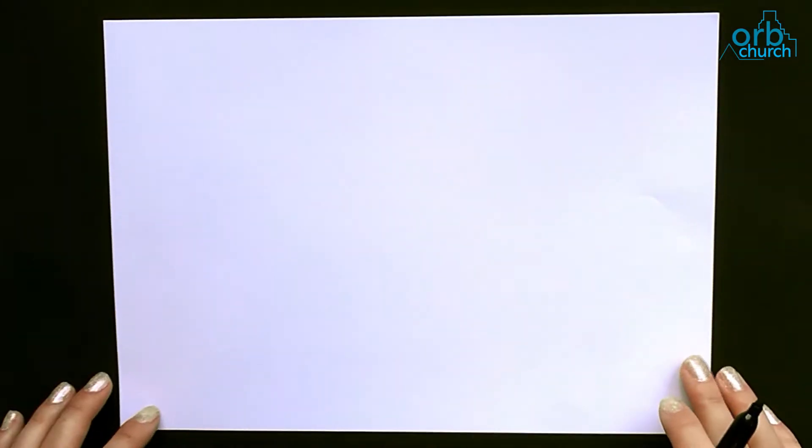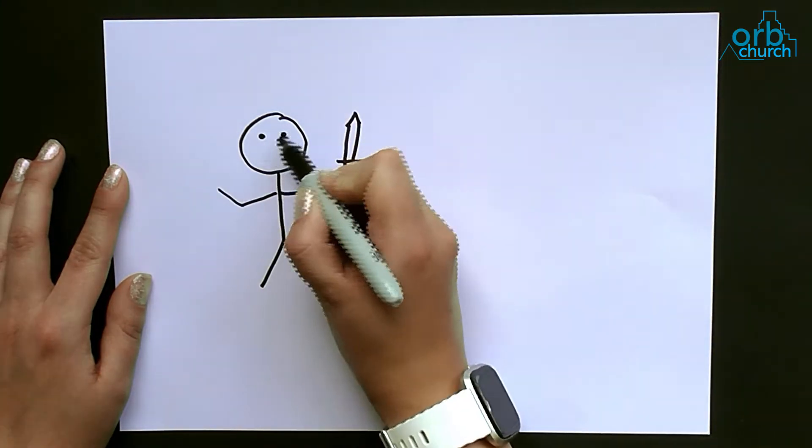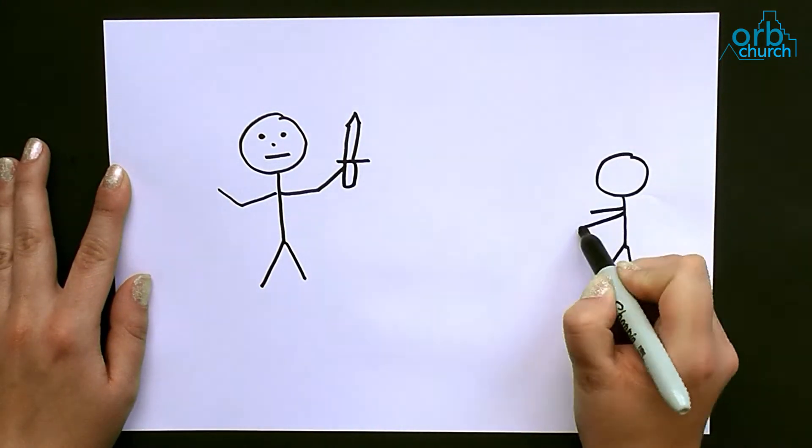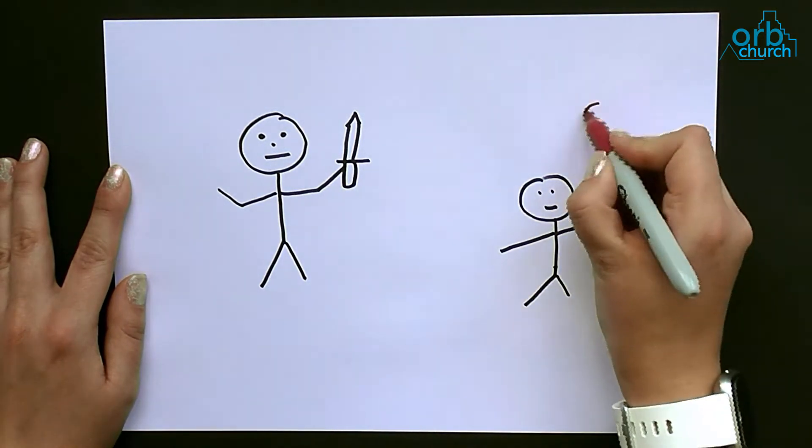While Jesus was praying, a group of soldiers were led to where Jesus was by Judas, one of Jesus's closest friends, who betrayed Jesus for some money. The soldiers arrested Jesus and took him away. They made fun of him and didn't treat him very nicely.